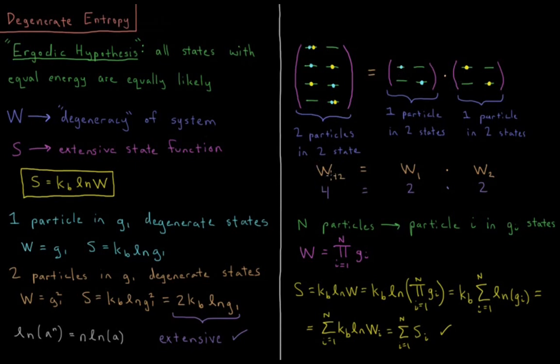This is equal to having one particle in two states and the other particle in two states. W12, the degeneracy of two particles, is equal to the degeneracy of one particle times the degeneracy of the other particle.